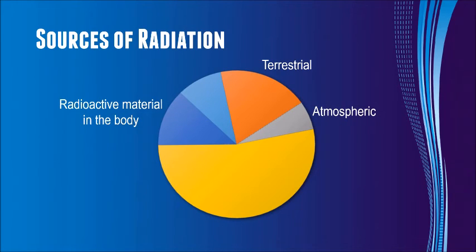Background radiation also comes from our solar system in the form of cosmic rays. The amount of background radiation an individual is exposed to on a yearly basis is dependent on a number of factors, including soil composition, altitude, and our diets.